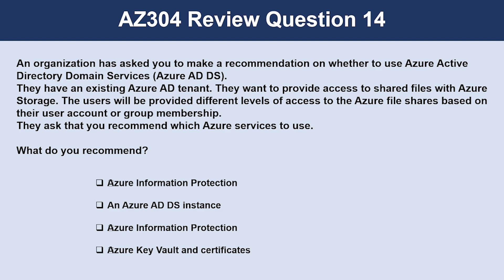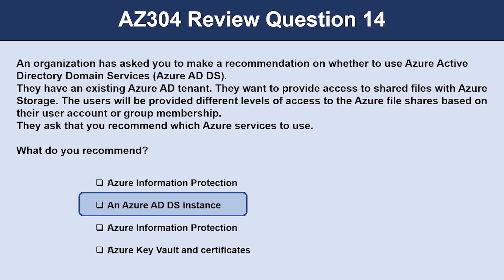Question number fourteen. An organization wants to provide access to shared files with Azure storage, with users given different levels of access to Azure file shares based on user account or group membership. They have an existing Azure AD tenant. The correct answer is an Azure AD Domain Service instance. Azure Files supports identity-based authentication over SMB through Azure Active Directory Domain Services. Without Azure AD Domain Services, it is not possible to provide different levels of access to Azure Files based on user identity or group membership.